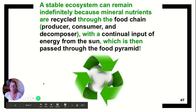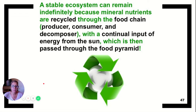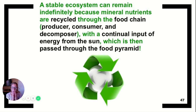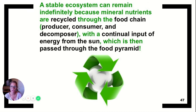A stable ecosystem can remain indefinitely because the nutrients are getting recycled through the food chain — producers, consumers, decomposers — with a continual input of energy from the sun, which gets passed up through the food pyramid. The next video will cover the biogeochemical cycles, and how carbon, phosphorus, water, and nitrogen pass through living organisms. But for this one, that's it.